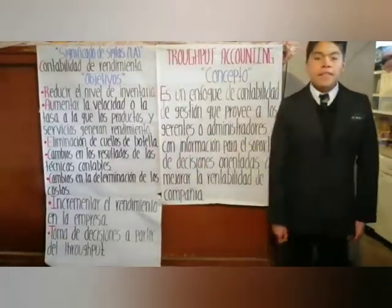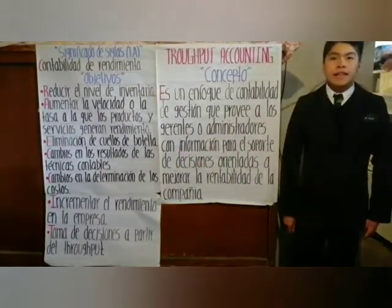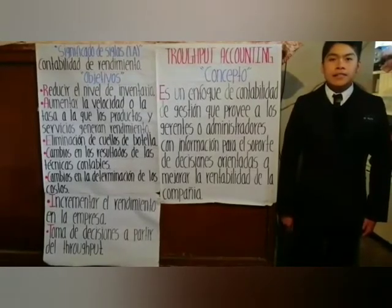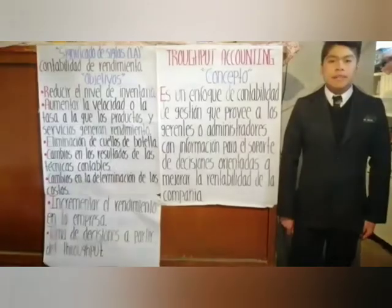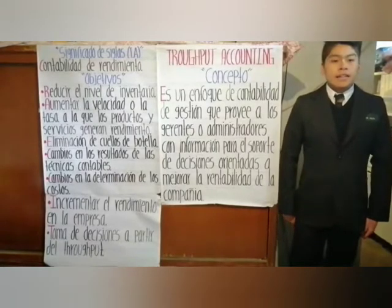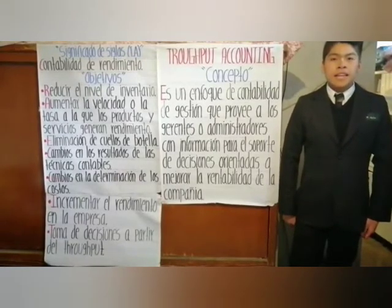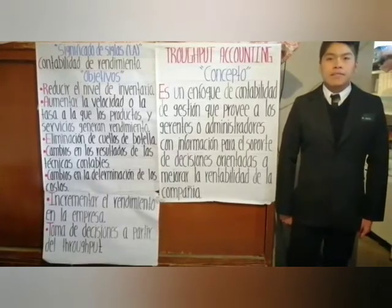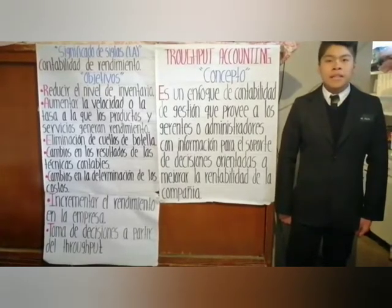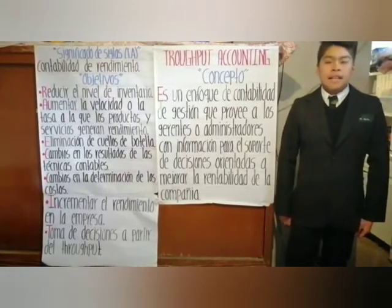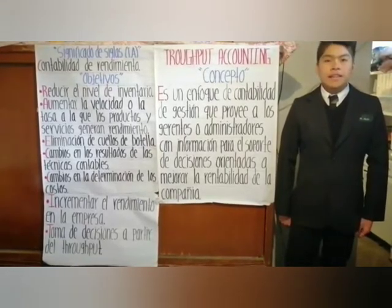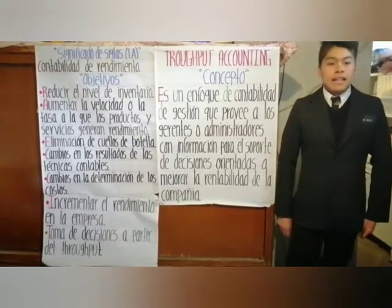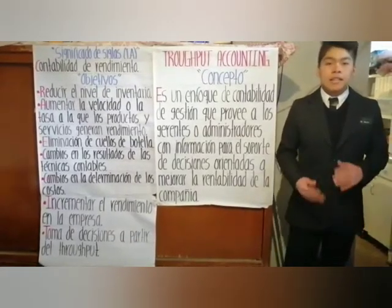Las siglas TA significan contabilidad de rendimiento. Los objetivos de esta técnica son los siguientes: el primero y más importante es reducir el nivel de inventario; el segundo es aumentar la velocidad o la tasa a la que los productos y servicios generan rendimiento; el tercero es la eliminación de cuellos de botella, es decir, busca eliminar aquellas actividades que retrasan el proceso de producción.